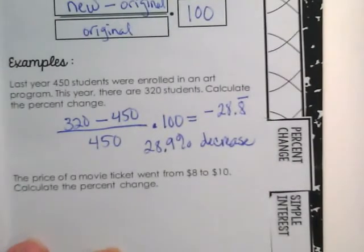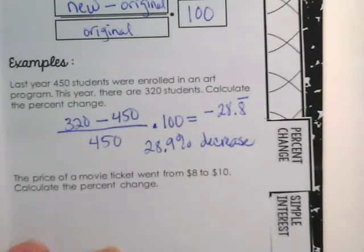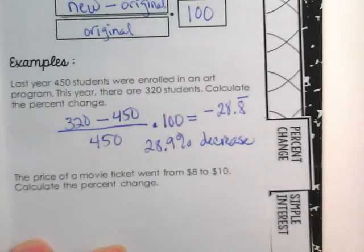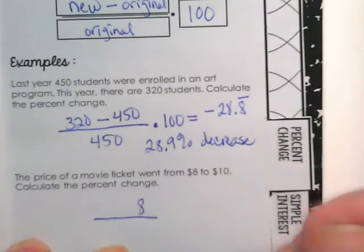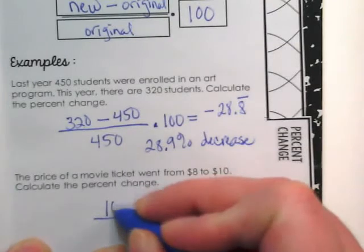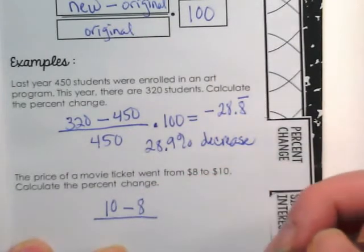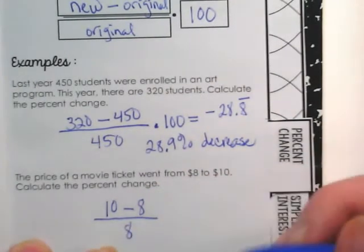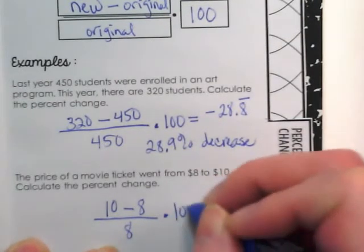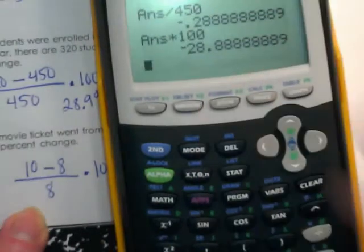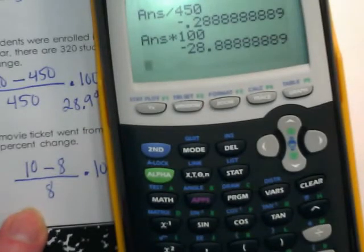Our second example: the price of a movie ticket went from $8 to $10. Is this going to be a decrease or an increase? Increase. We're going to calculate the percent change. What is the original? Eight. What is the new? Ten. And we take the new minus the original, divide it by the original, times 100.